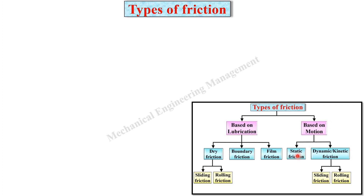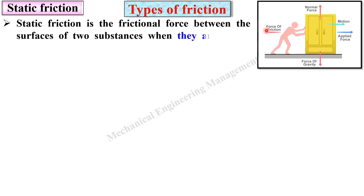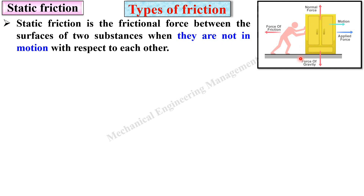Based on motion, the first type is static friction. Static friction is the frictional force between surfaces when they are not in motion with respect to each other. If the body is at rest, then you can say there is static friction.